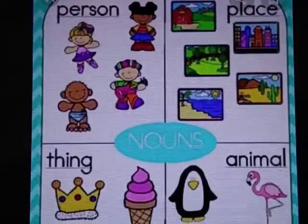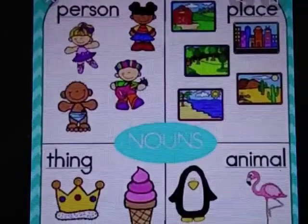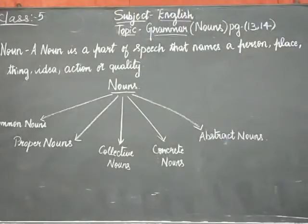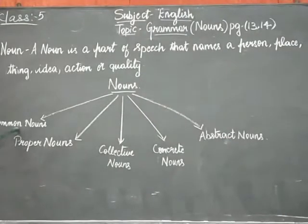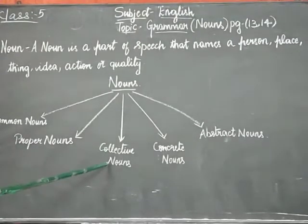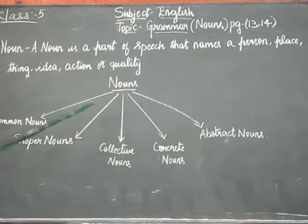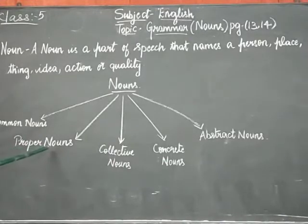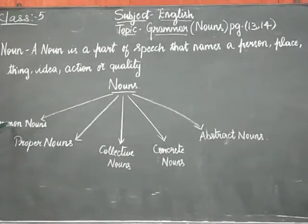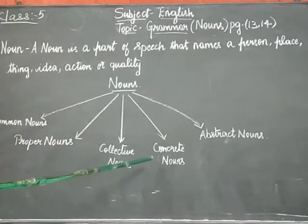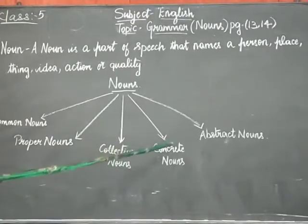Now let us study types of nouns. Nouns are divided into five types: first, common noun; next, proper nouns; collective nouns; concrete nouns; and abstract nouns. We will be studying in detail what each of these means.